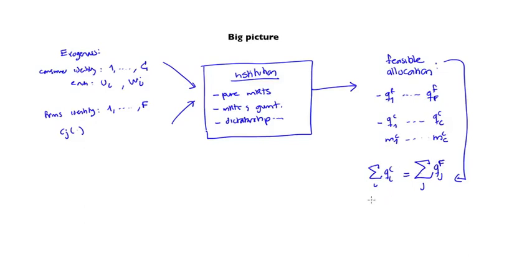And the second thing has to be that the sum of all good M consumed by consumers, plus the sum of all good M used by firms to produce, which is this, has to be equal to the amount of the good that was available in the beginning.